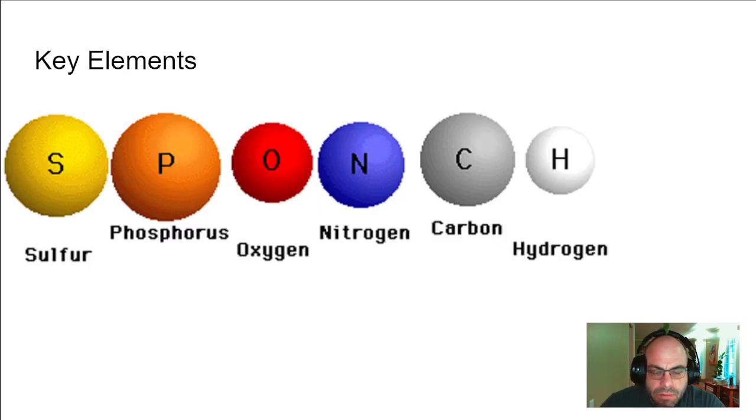First thing, we're going to look at the key elements that are found in all living things. Here they are: sulfur, phosphorus, oxygen, nitrogen, carbon, and hydrogen.